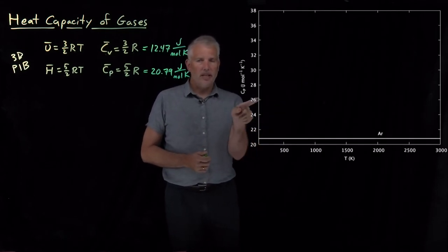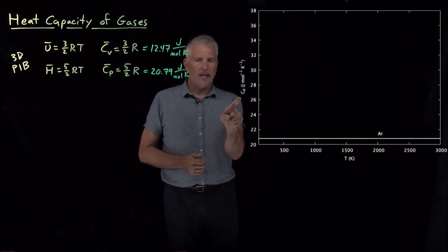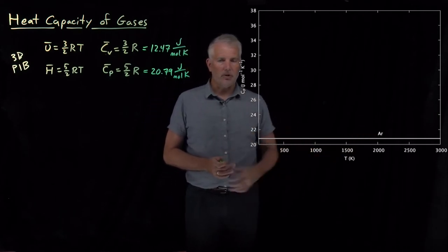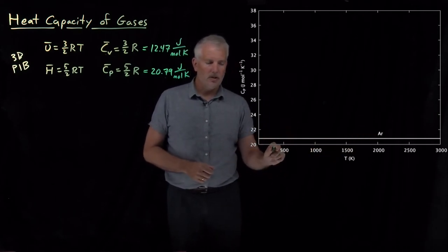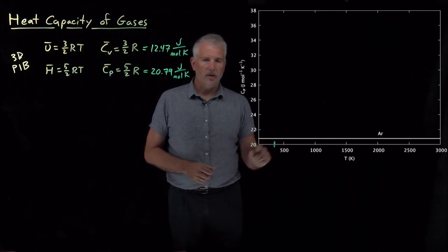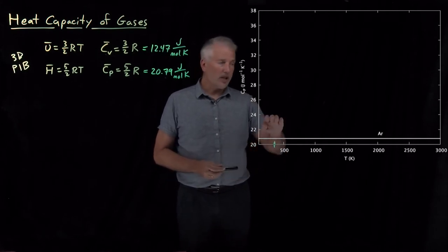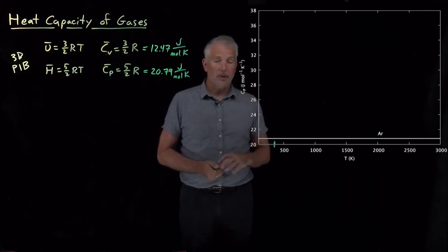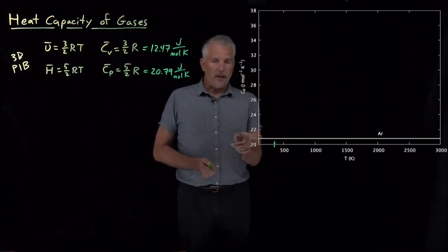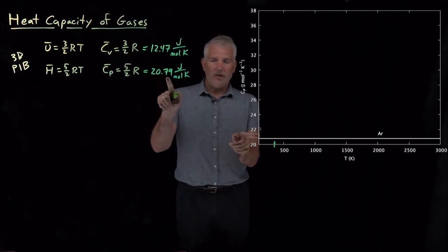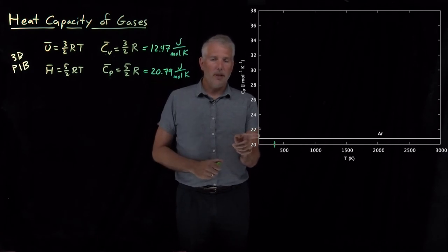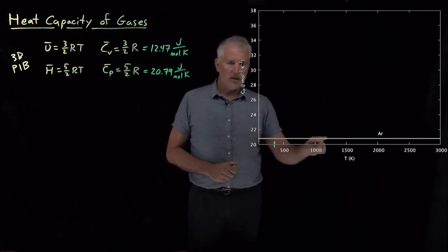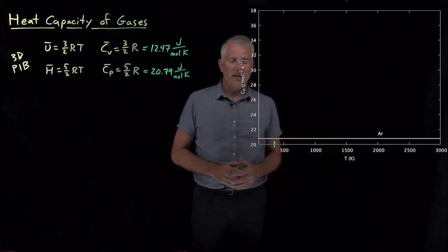So what I'm plotting now is the heat capacity of the gas as a function of the temperature. So room temperature is down here somewhere around 300 Kelvin. And for argon gas, again, a monatomic ideal gas, monatomic gas that behaves fairly ideally, things are fine. The value is 20.79, exactly as we predicted with the 3D particle in a box model. And that value does not change very much at all as the temperature changes.